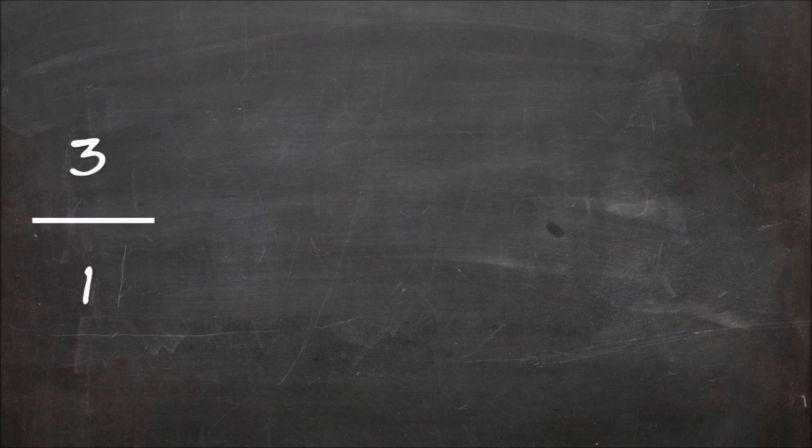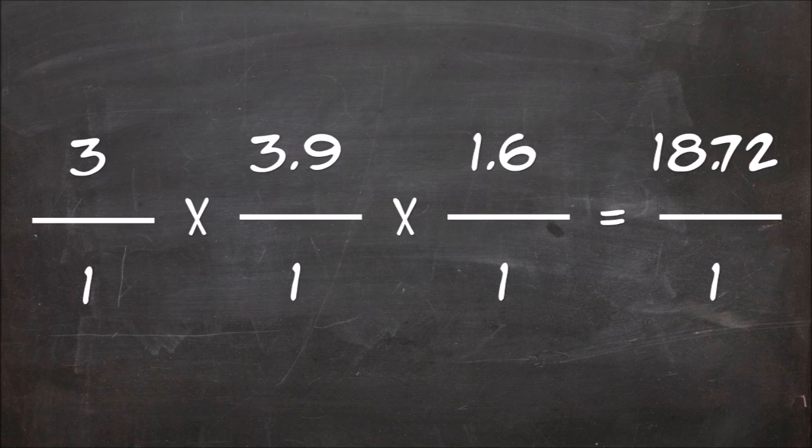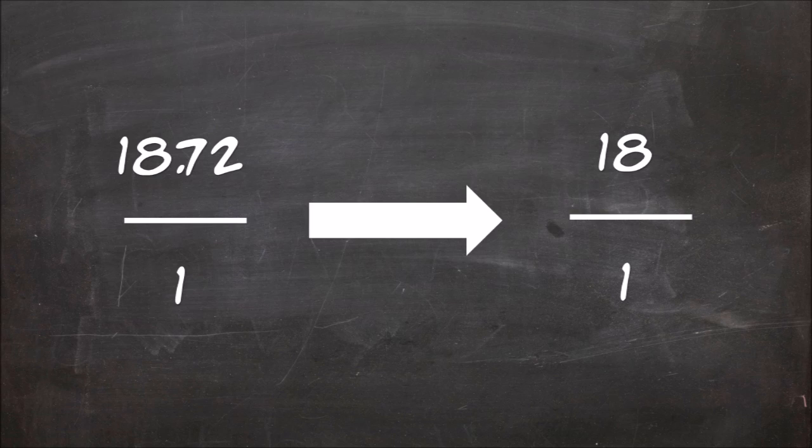You then multiply 3 to 1 by 3.9 to 1 by 1.6 to 1 together to get a gear set ratio of 18.72 to 1. The number gets rounded down for marketing purposes to 18 to 1.